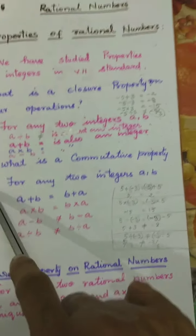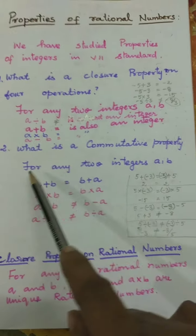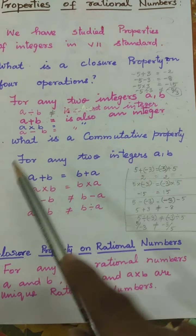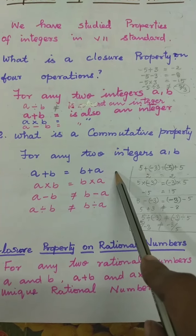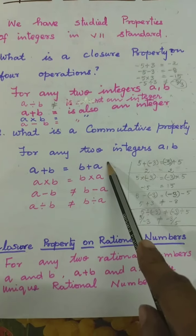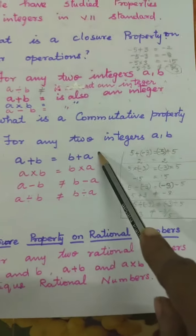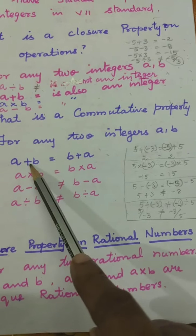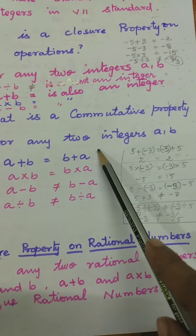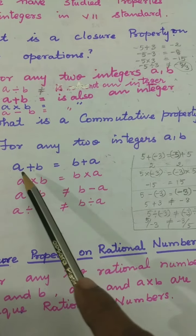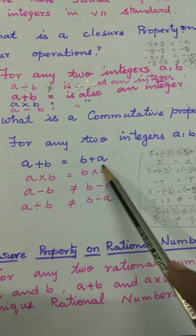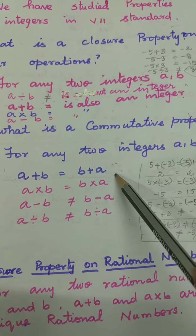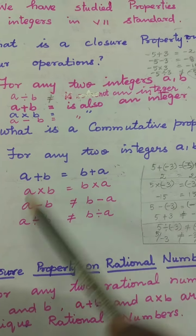Now we shall move to commutative property. What is commutative property? For any two integers A and B, A plus B is equal to B plus A — both answers must be equal. For example, 2 plus 5 is 7, and 5 plus 2 is 7. Both answers are equal, so it is commutative on addition. Commutative property is true in addition.